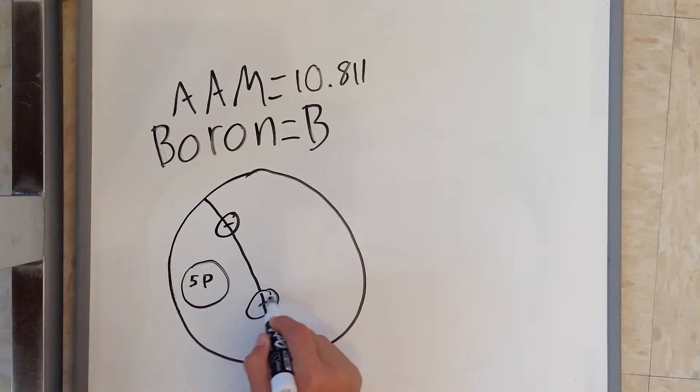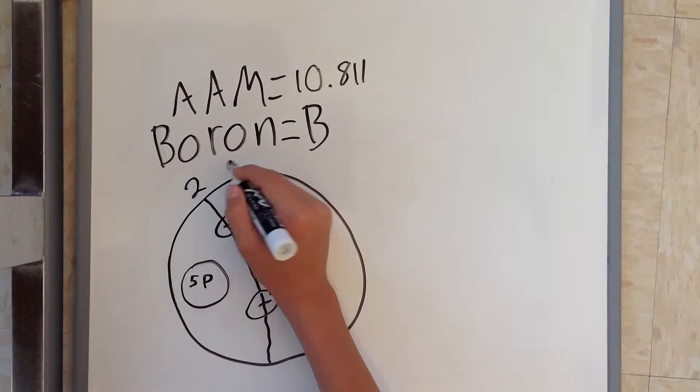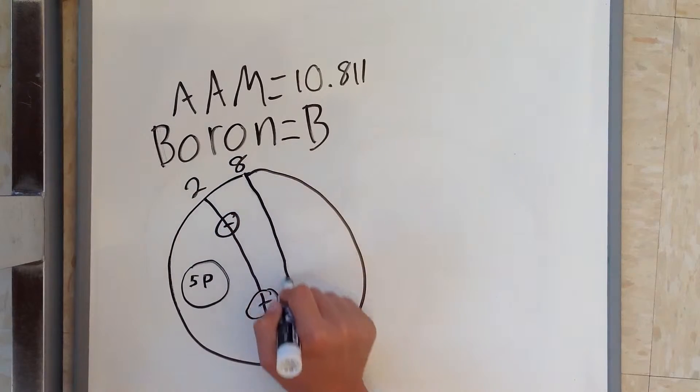You're going to start drawing out your electrons. The first row can only have two, and the second row can hold up to eight, but we only need three.